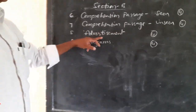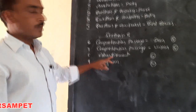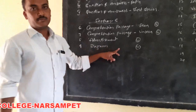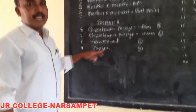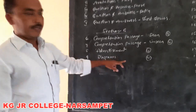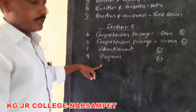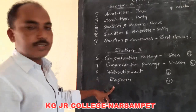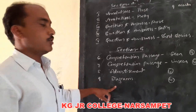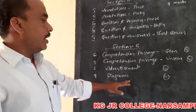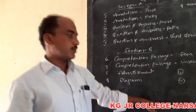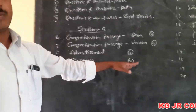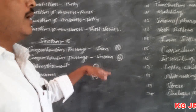Now we are going to discuss diagrams. These diagrams are of different types: tables, tree diagrams, pie charts, flow charts, and so on. It follows six questions and you have to write all six out of six. This section also carries four marks.